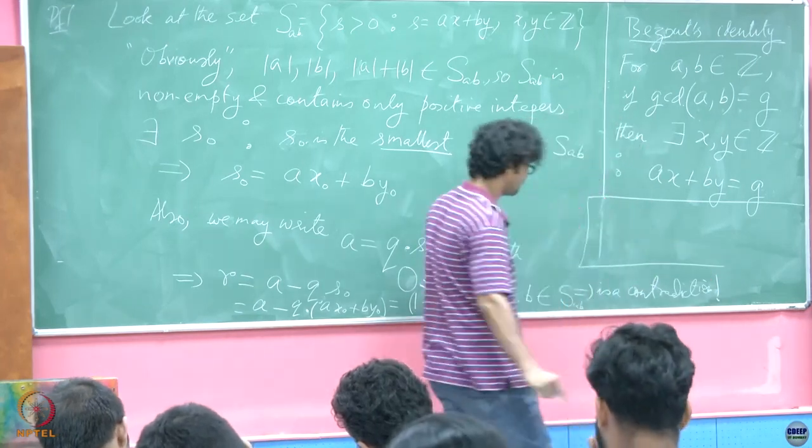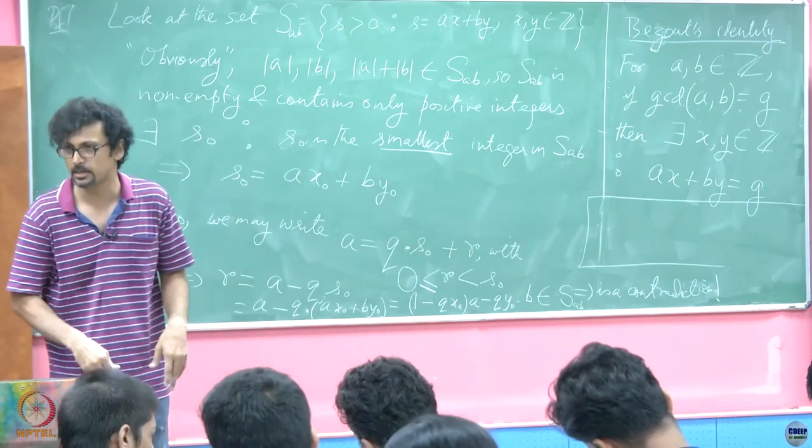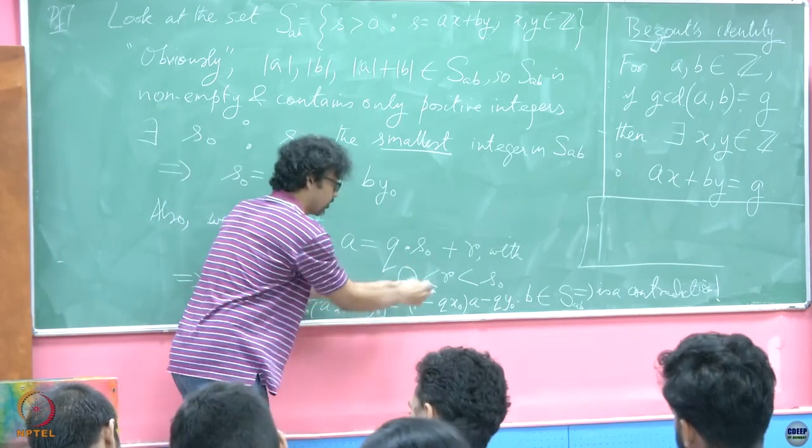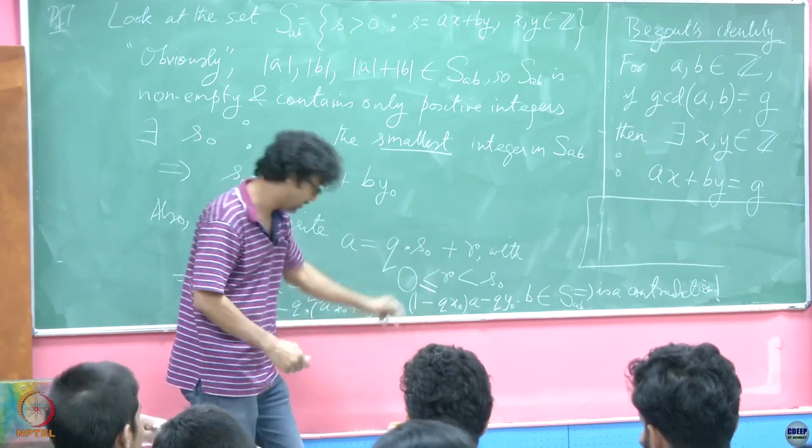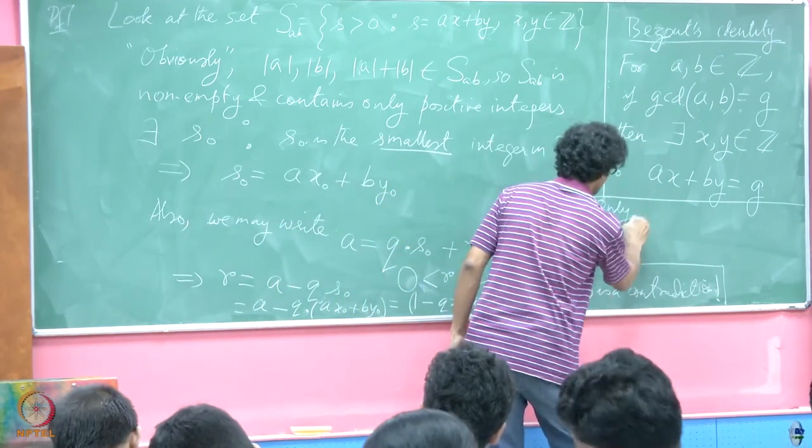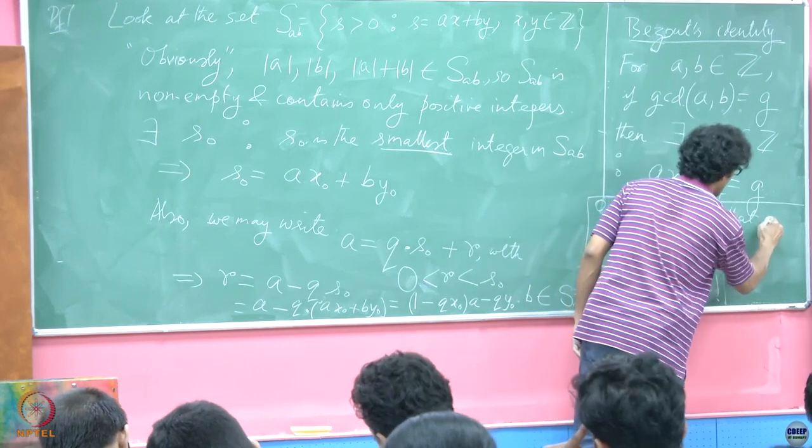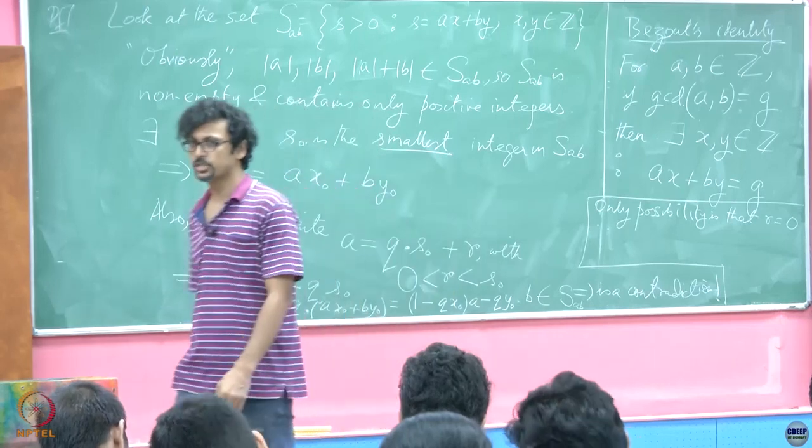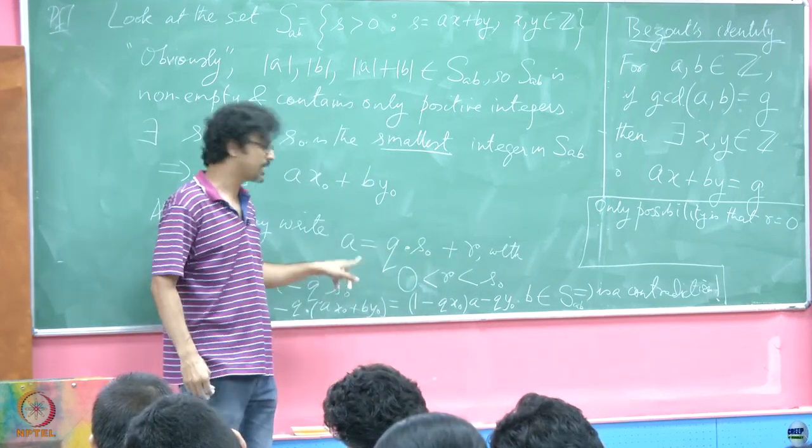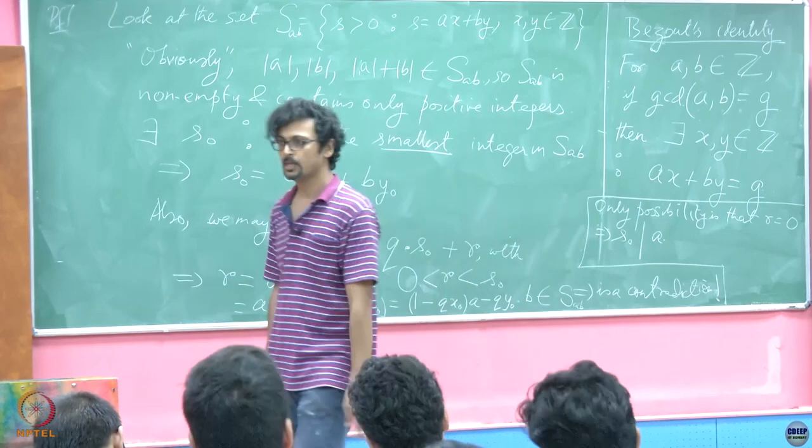This implies, the only possibility is that R is equal to 0. But what is the consequence of R being equal to 0? What does that tell me? If R is equal to 0, then S0 divides A. Yeah? This implies S0 divides A. This is the notation for S0 divides A.